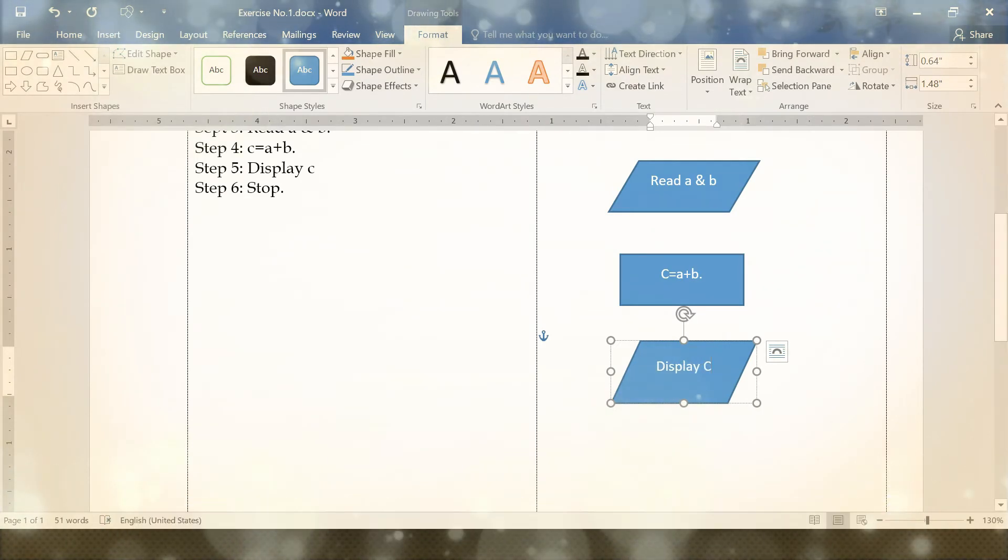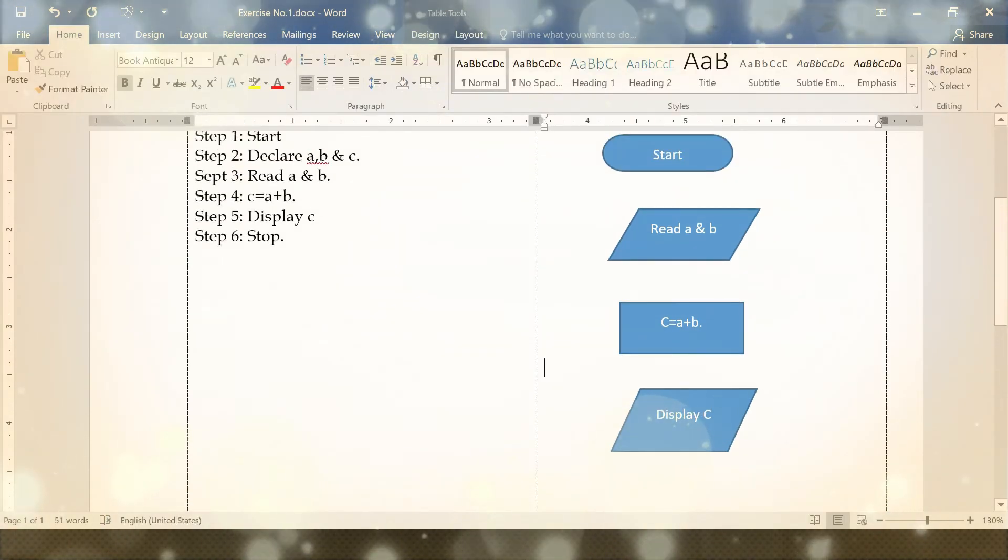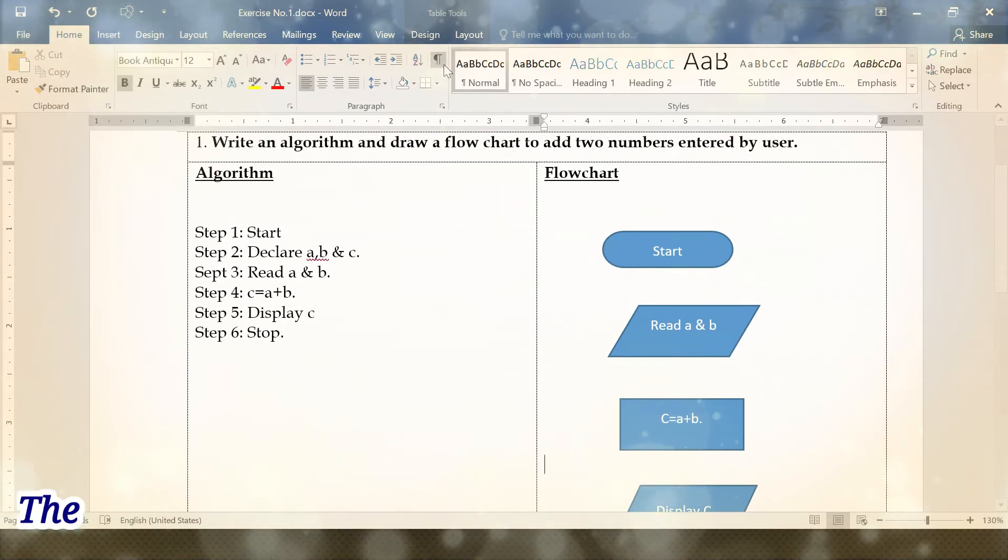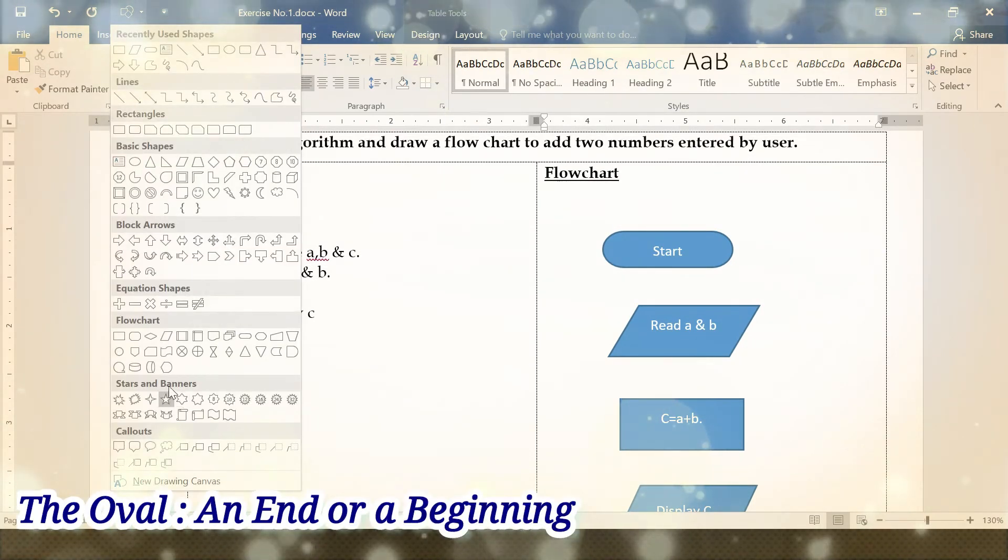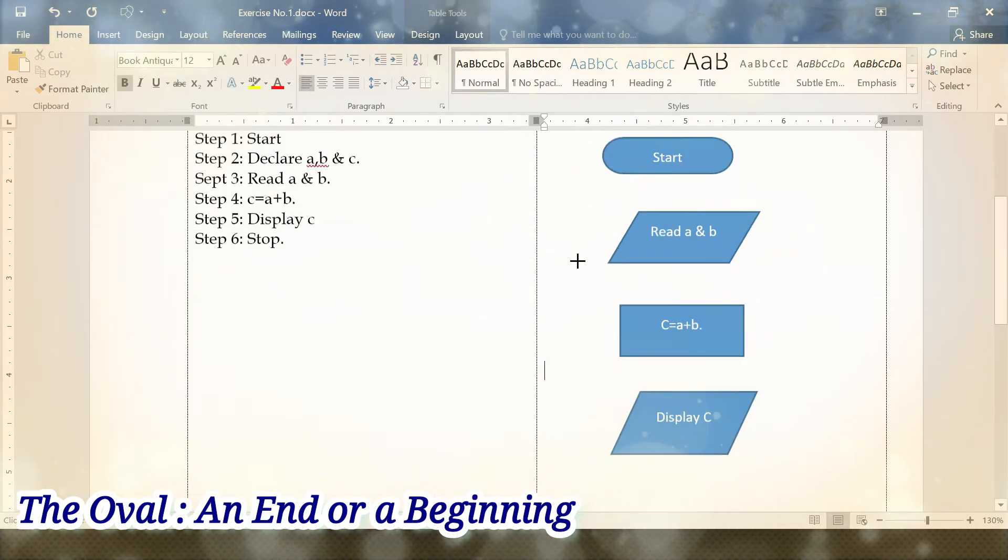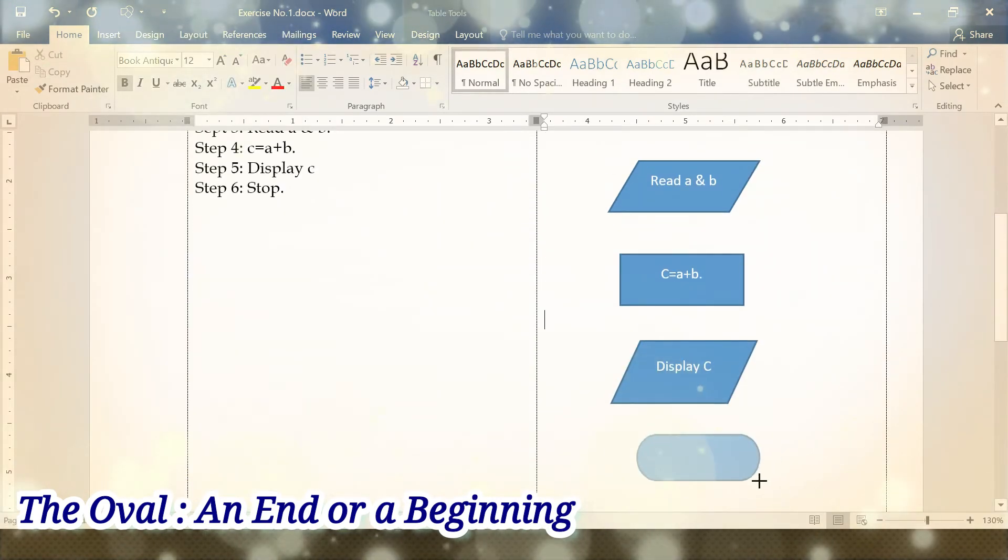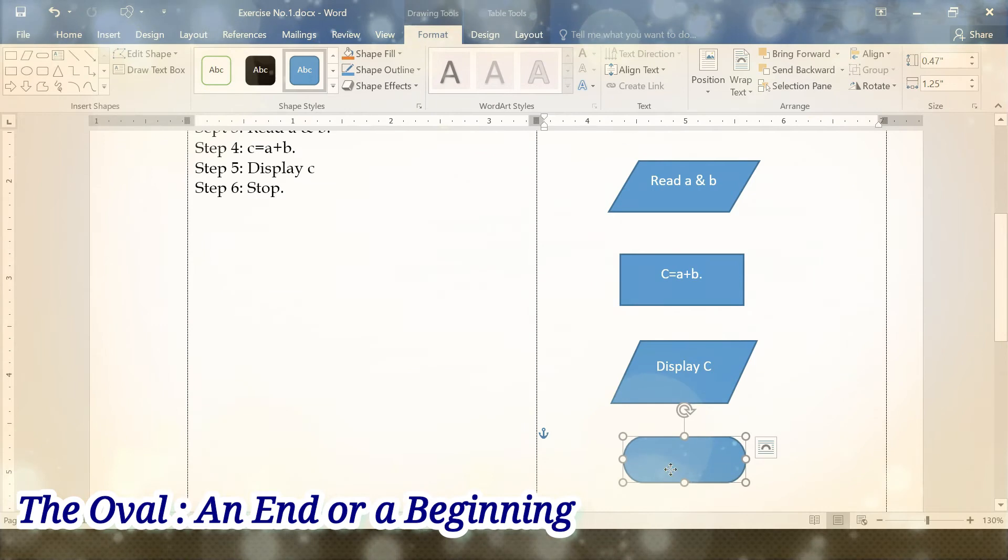What is the last step? Step number six, stop. Go to shapes, look for start and stop. Right click, add text, stop.